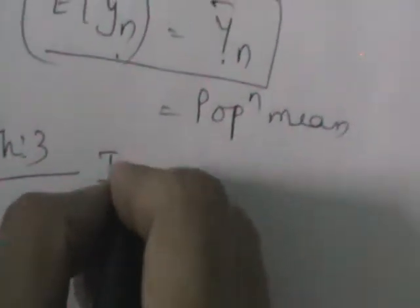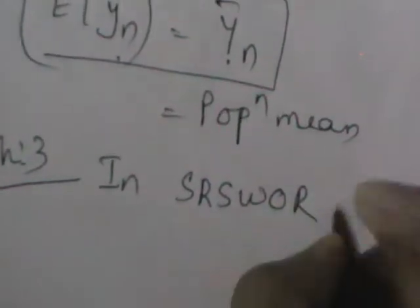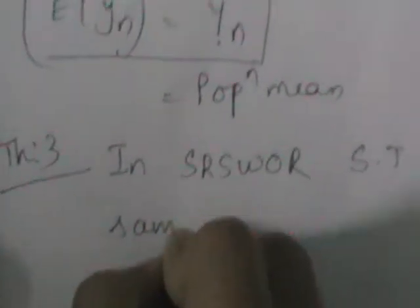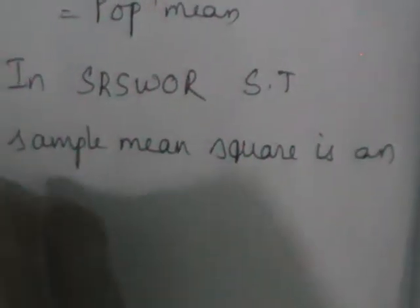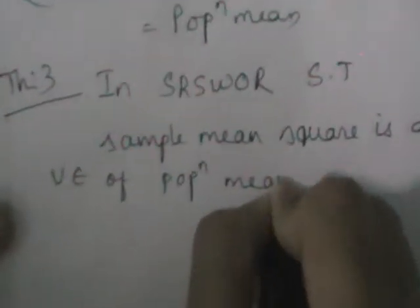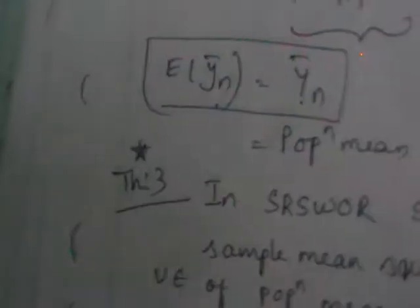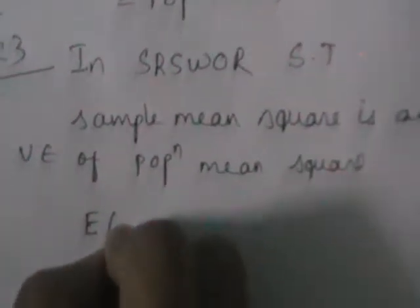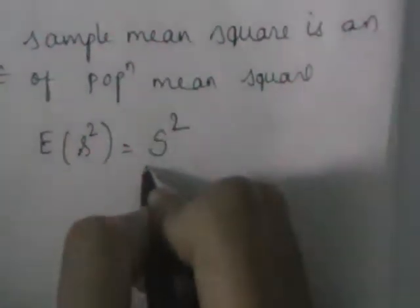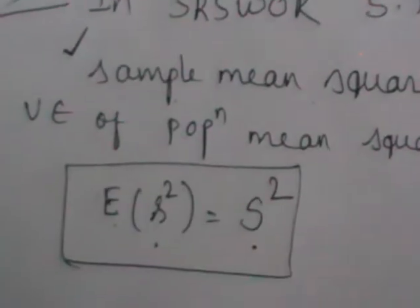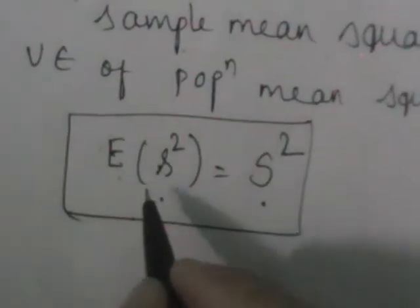This is the second theorem. Let us now do the third theorem. The statement is: in SRSWOR, show that sample mean square s² is an unbiased estimator of population mean square S². This is a very important one. In examination, you should check whether it is SRS or stratified random sampling. You need to prove that sample mean square is an unbiased estimator of population mean square.